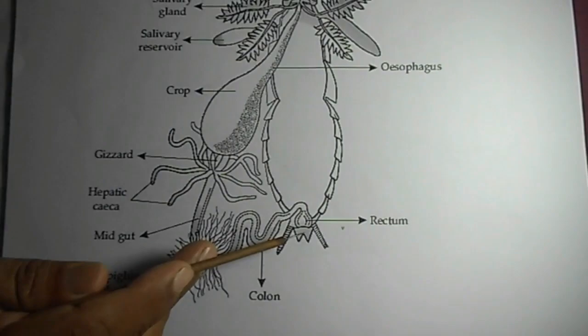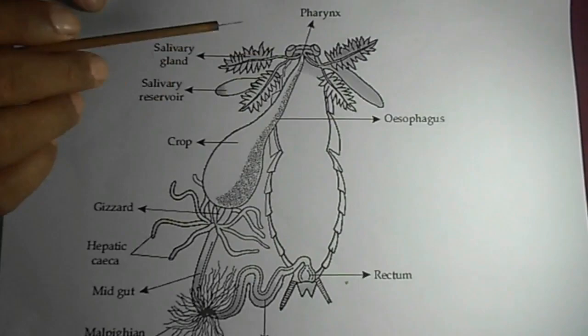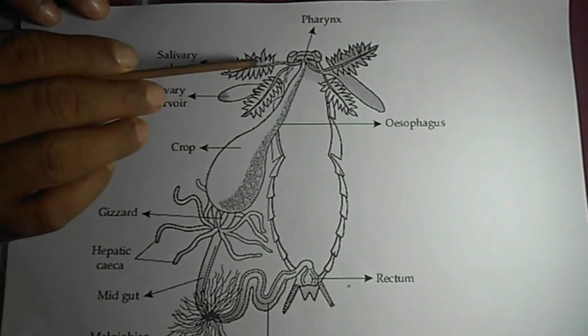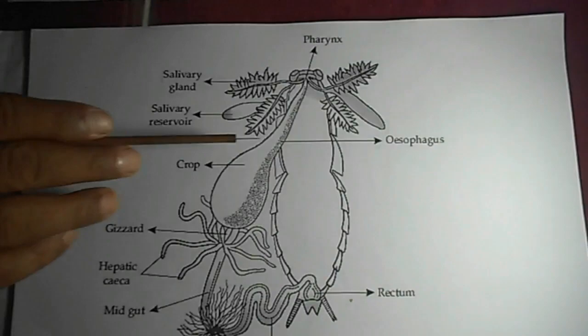The hindgut consists of the colon, rectum, and the anal aperture situated in the 10th abdominal segment. I would also like to mention that two salivary glands are present. These are leaf-like salivary glands, and there are two salivary reservoirs. The salivary duct opens at the base of the hypopharynx. So this is all about the digestive system of cockroach.